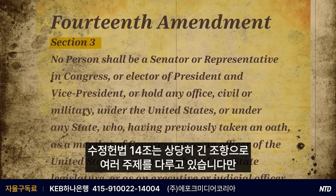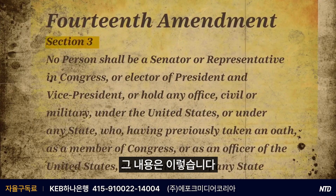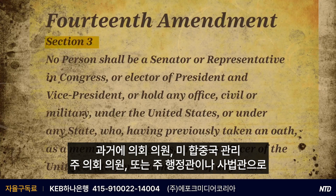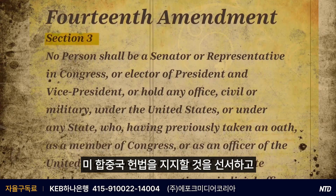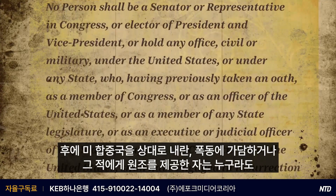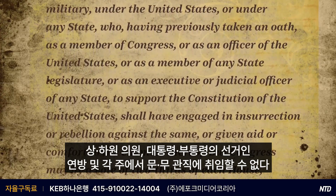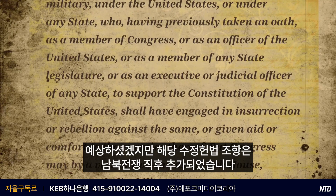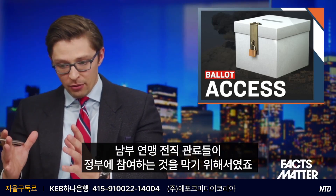The 14th Amendment is a rather long amendment covering many different topics, but for today's discussion, here is Section 3: 'No person shall be a senator or representative in Congress, or elector of President and Vice President, or hold any office civil or military under the United States or under any state, who having previously taken an oath as a member of Congress, or as an officer of the United States, or as a member of any state legislature, or as an executive or judicial officer of any state, to support the Constitution of the United States, shall have engaged in insurrection or rebellion against the same, or given aid or comfort to the enemies thereof.' This amendment was enacted shortly after the U.S. Civil War in order to keep former members of the Confederacy out of government.